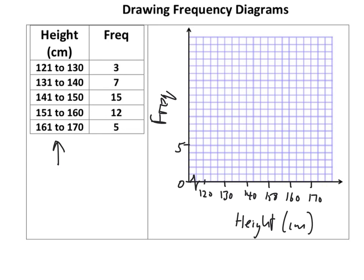We've got 5 there, 10, 15, and 20. Now a frequency diagram, there's two types. There's also known as a frequency polygon or there's just a frequency diagram. It's a bit like a bar chart but the bars touch this time.